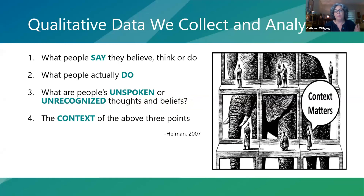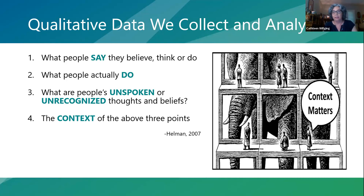What are we collecting when doing qualitative research? First, it's what people say they believe, think, or do — often gathered through interviews, focus groups, and questionnaires with open-ended queries. We also get at what people actually do through observation. We bring these together to understand unspoken or unrecognized thoughts and beliefs that influence behavior, and we're interested in the broader context of how these come together. In implementation science, this includes understanding context from a multi-level perspective.